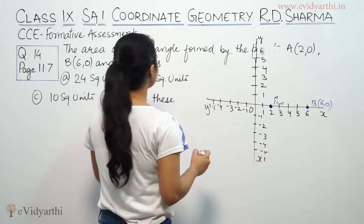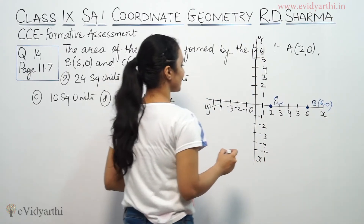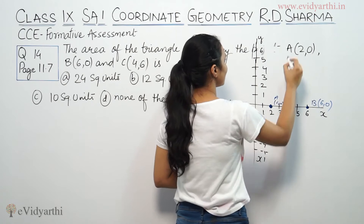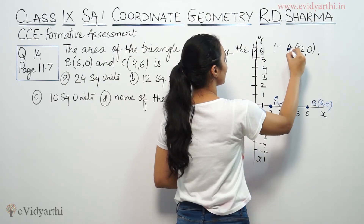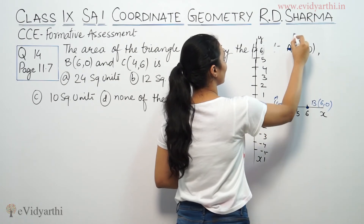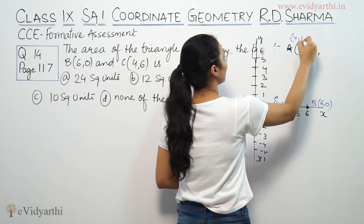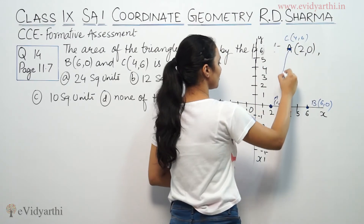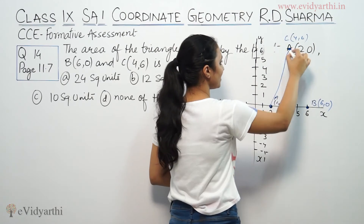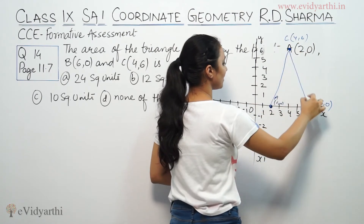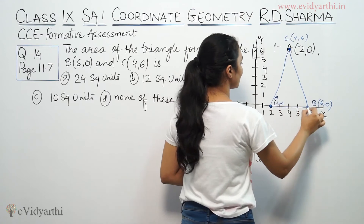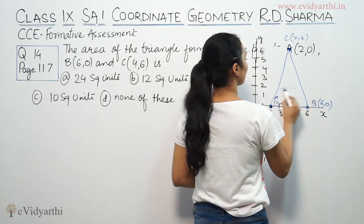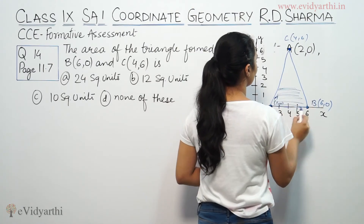Then C(4,6) — x is 4 and y is 6, so C is at this point. This is C. So this is our triangle formed — this is triangle ABC.